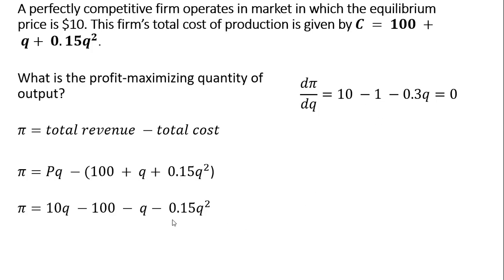Finally, the derivative of minus 0.15Q squared. We bring the 2 down in front, so 2 times minus 0.15 is minus 0.3. And then in the exponent here, we subtract 1 from the 2, so we just get Q.